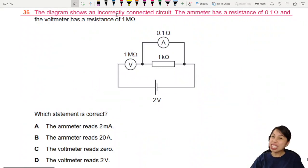Here we have a diagram where you have an incorrectly connected circuit. This is what you should not do in labs. The ammeter has a resistance of 0.1 ohms. Ammeters ideally have very small resistance, and the voltmeter has a huge resistance of 1 megaohm.